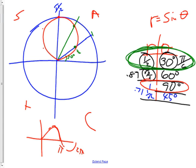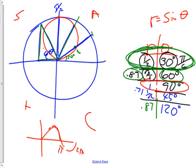At 120 degrees — that's a 30-60-90 reference angle — sine of 120 is basically sine of 60 again, so r ≈ 0.87. Then at 150 degrees, the reference angle is 30 degrees so r = 1/2 again. When it's all said and done, it makes a circular shape. Now let's actually look at that on the graphing calculator.